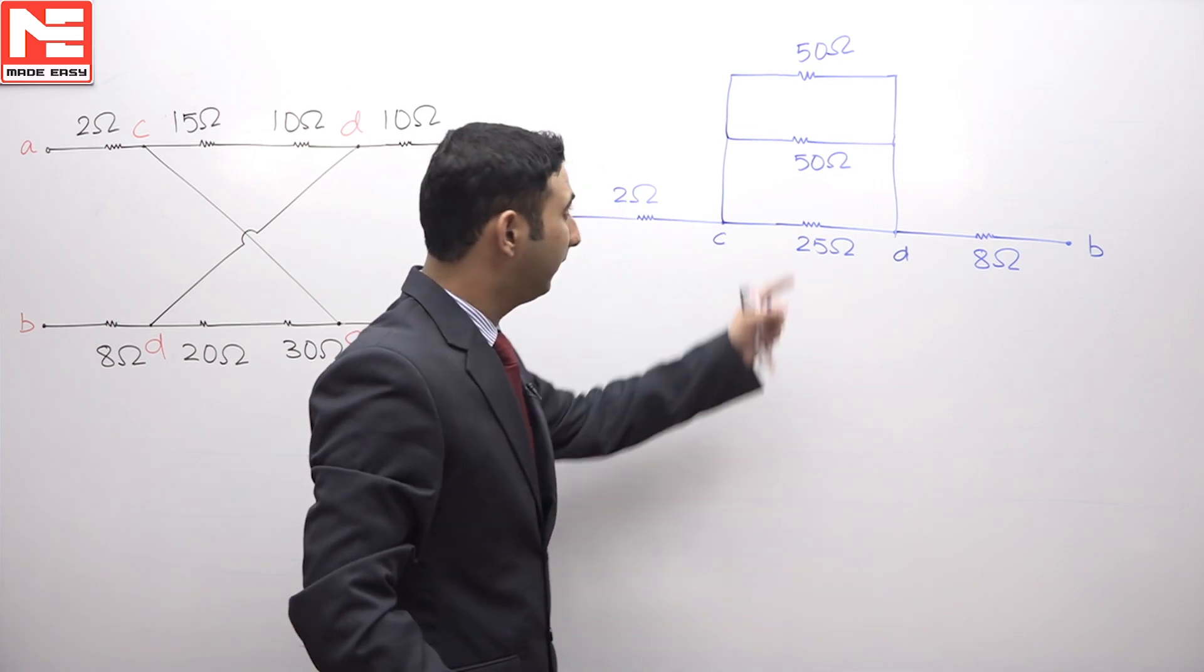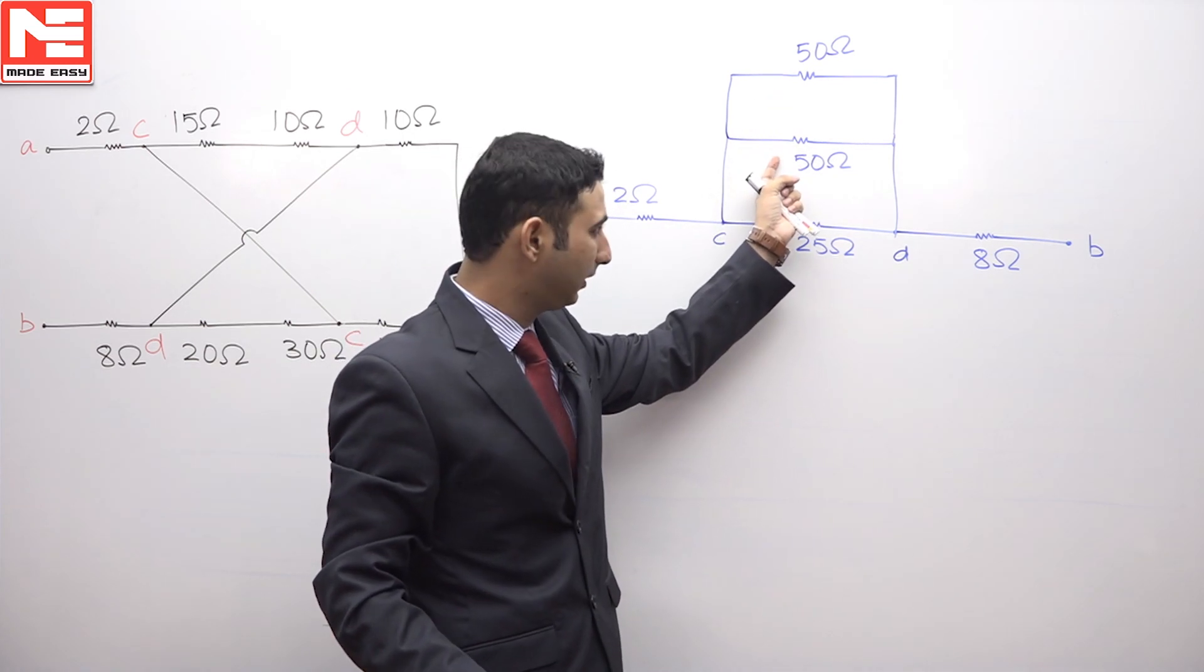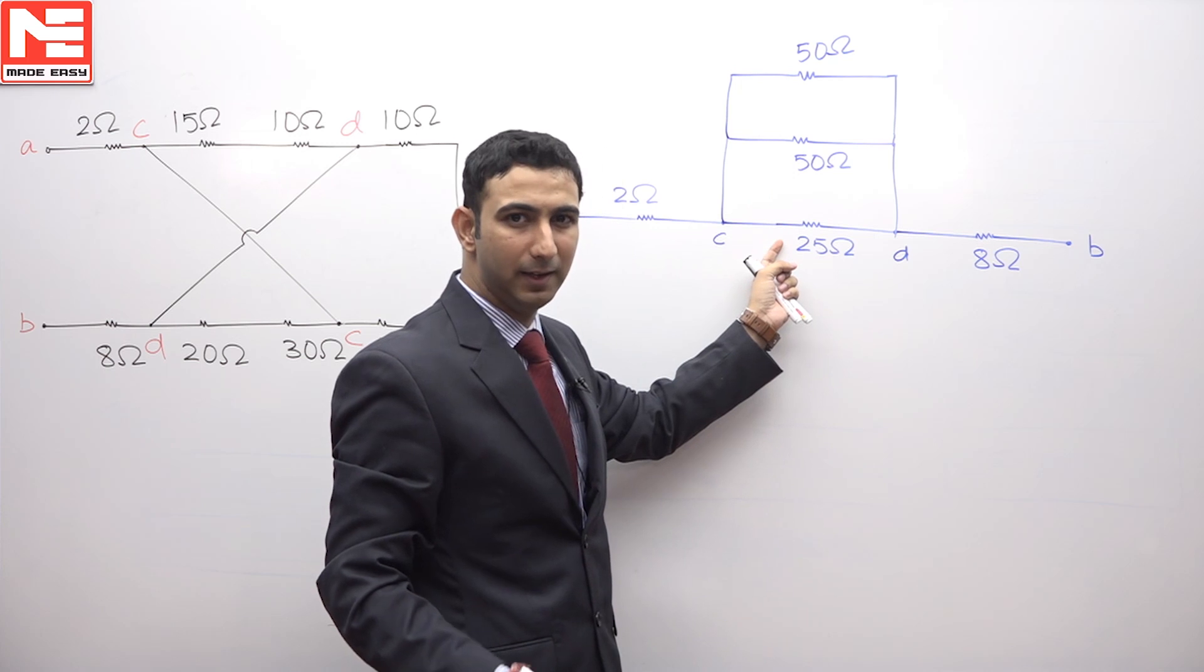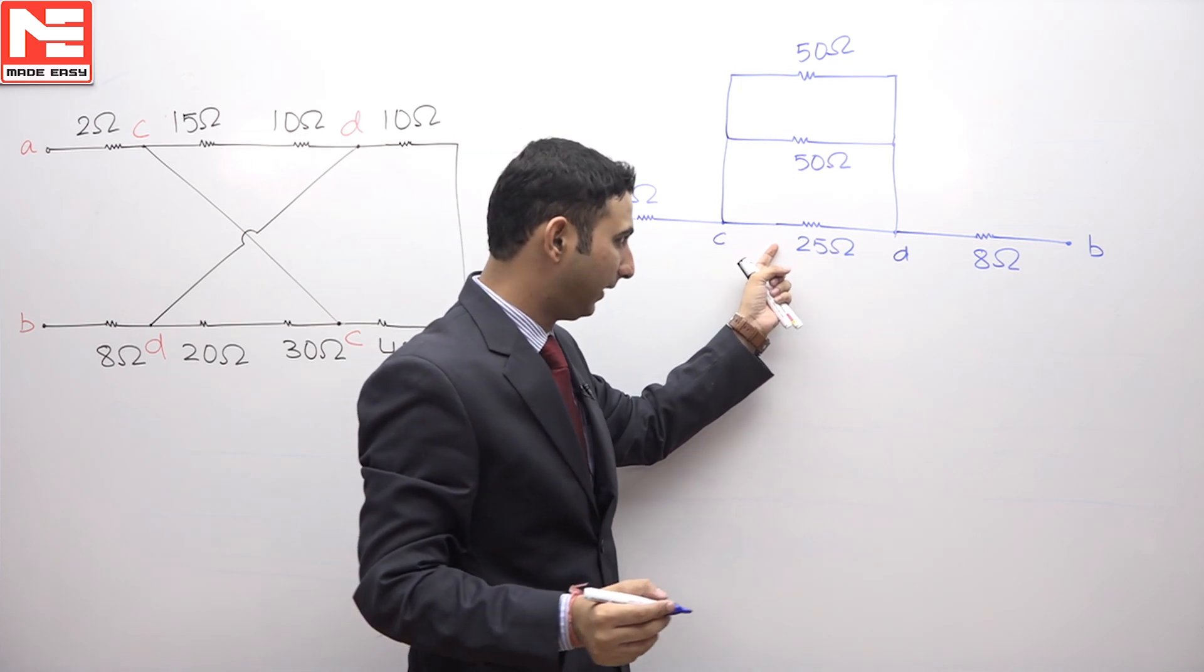Now if you see, 50 and 50 connected in parallel, it will be 25 ohms. 25 and 25 connected in parallel, that is 25 by 2, that is 12.5 ohms. It means this can be redrawn like this.